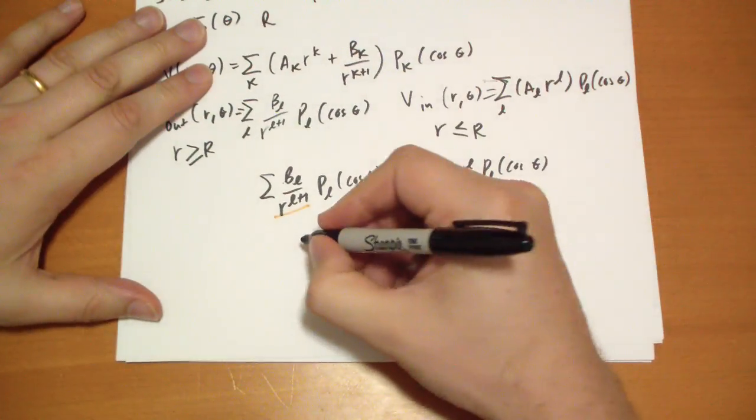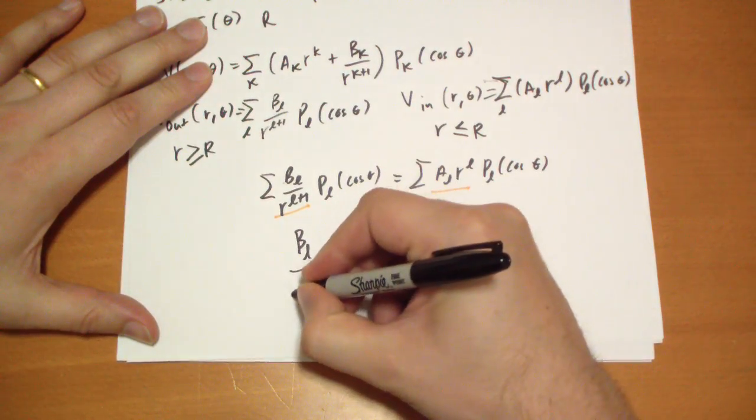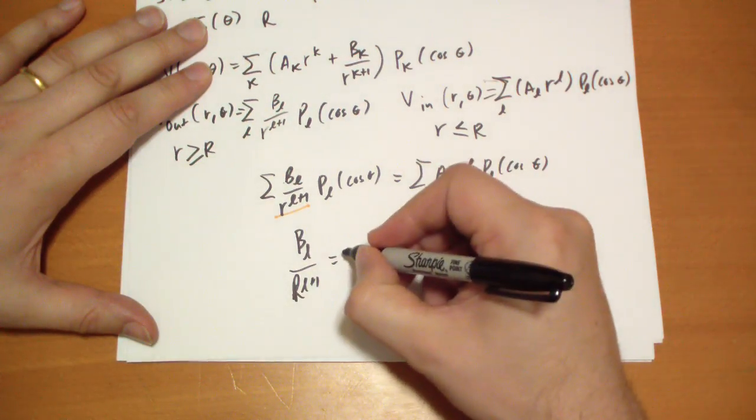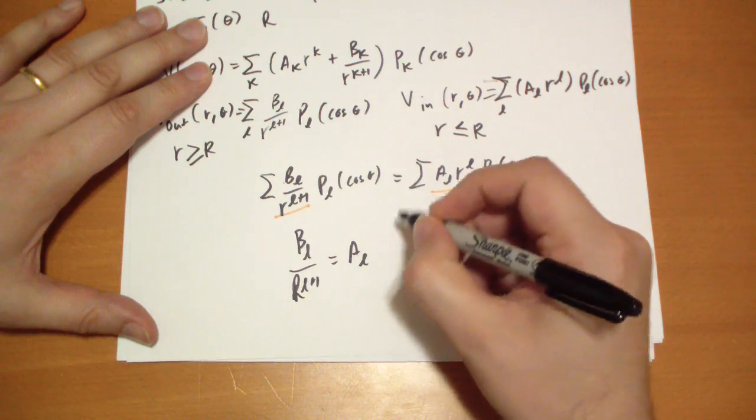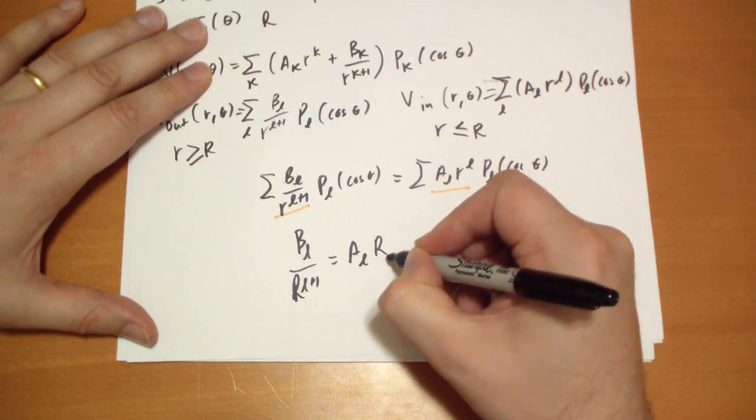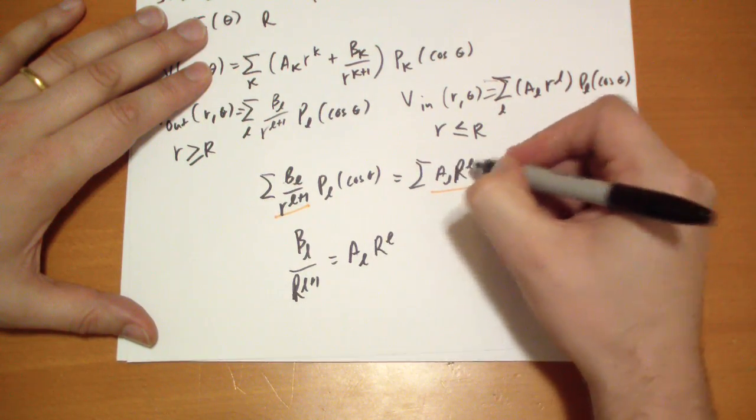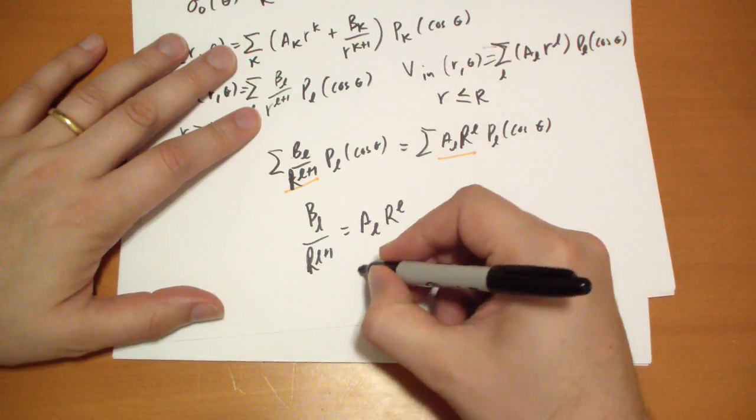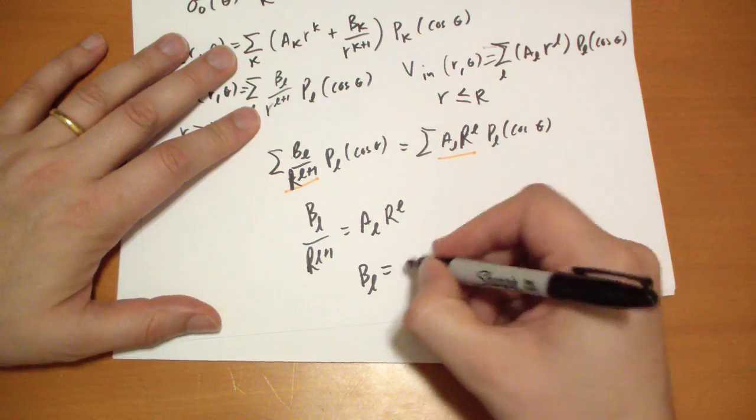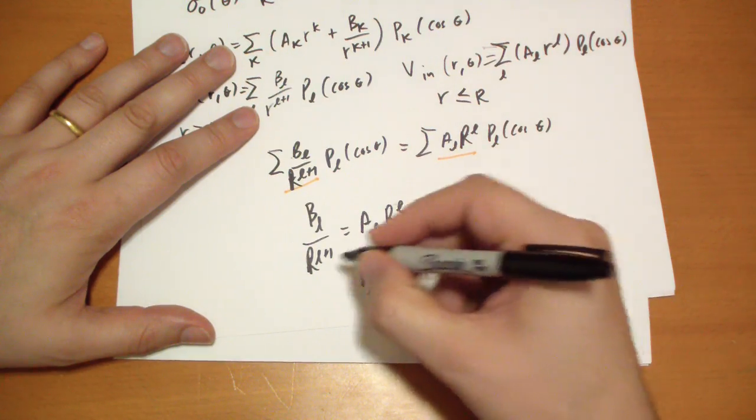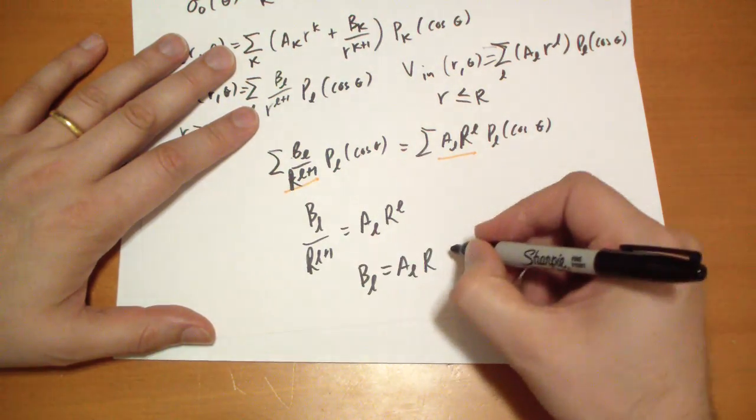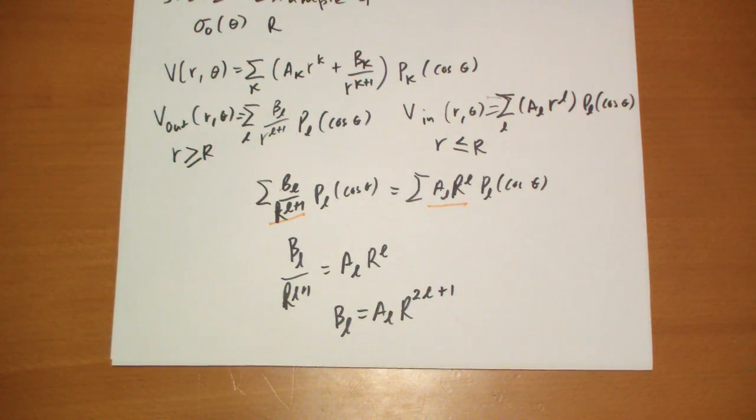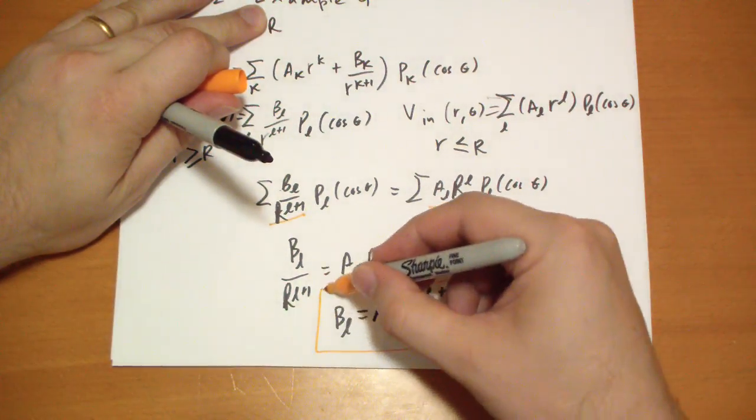So we run with this. B_L over capital R^(L+1) is equal to A_L*capital R^L. These are capital Rs, so it's only true when you're at capital R. And so we end up with the conclusion that B_L equals A_L*R^(2L+1). Let's box that and save it for later.